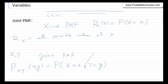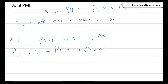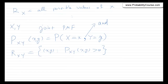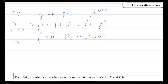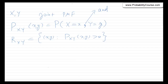Remember, comma always means 'and.' The range is a set of all possible values of x and y — all pairs (x, y) such that the probability mass function is positive. We can show all of these points in a two-dimensional graph. If this is my y-axis and this is my x-axis, I can plot all of these points.